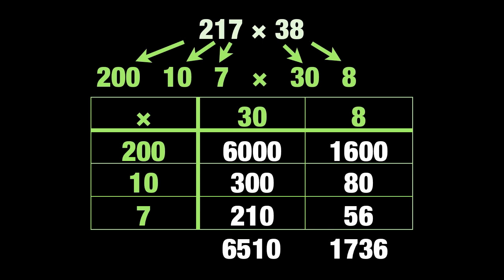6510 plus 1736 equals 8246. Hey presto! That's the answer — 217 times 38 equals 8246.